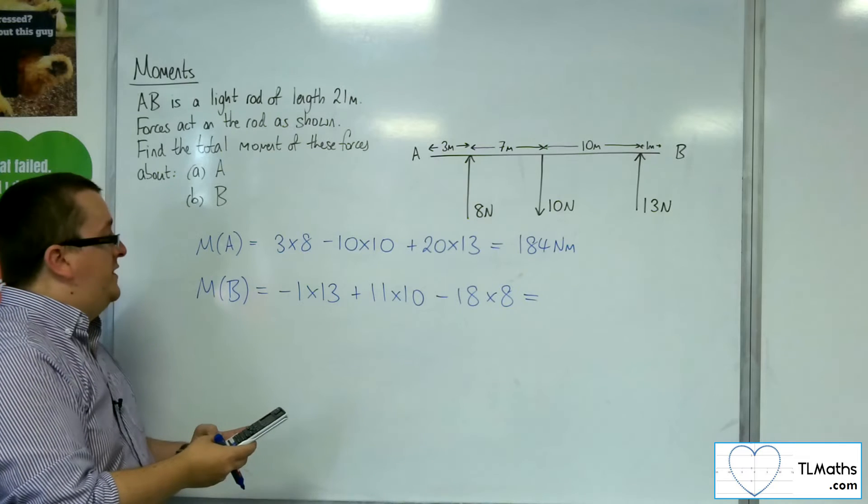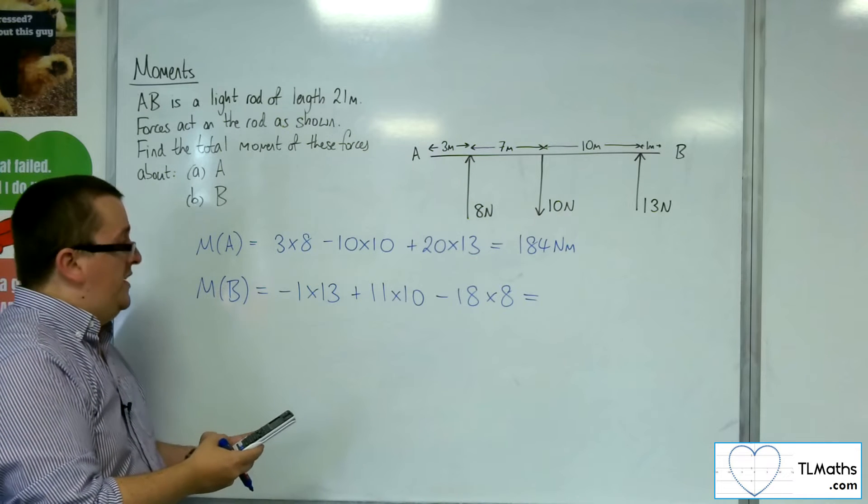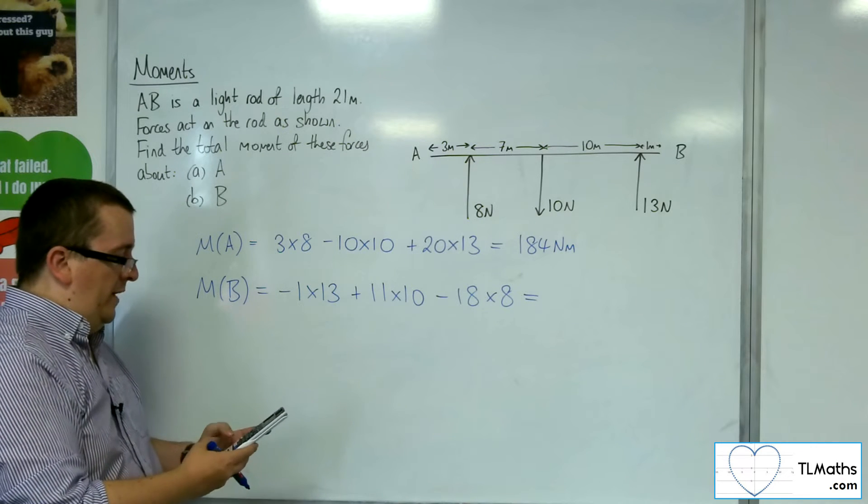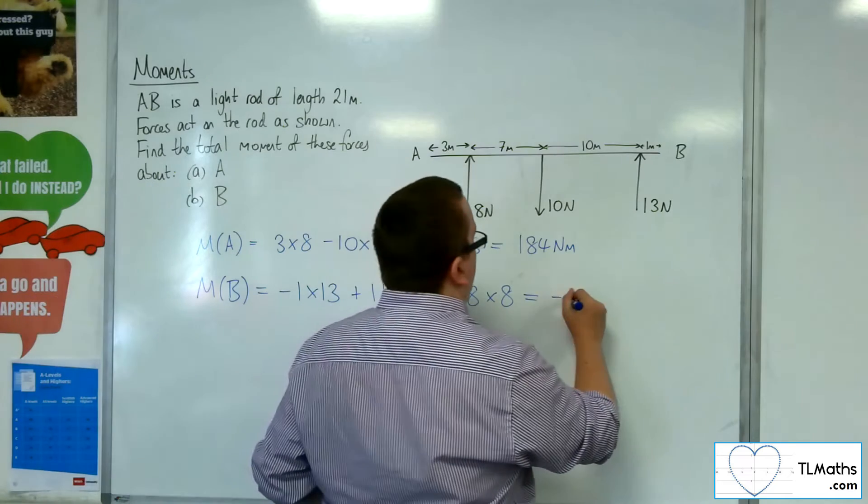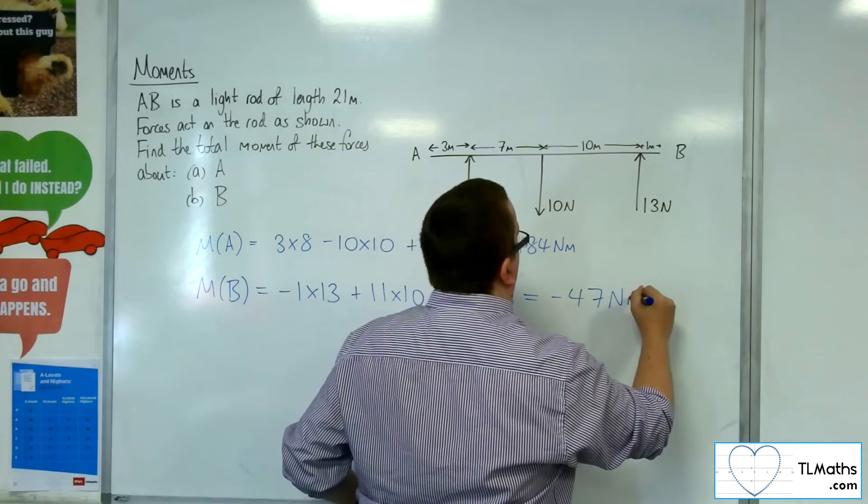So we've got minus 13 plus 11 lots of 10, take away 18 lots of 8, and that gets us minus 47 newton meters.